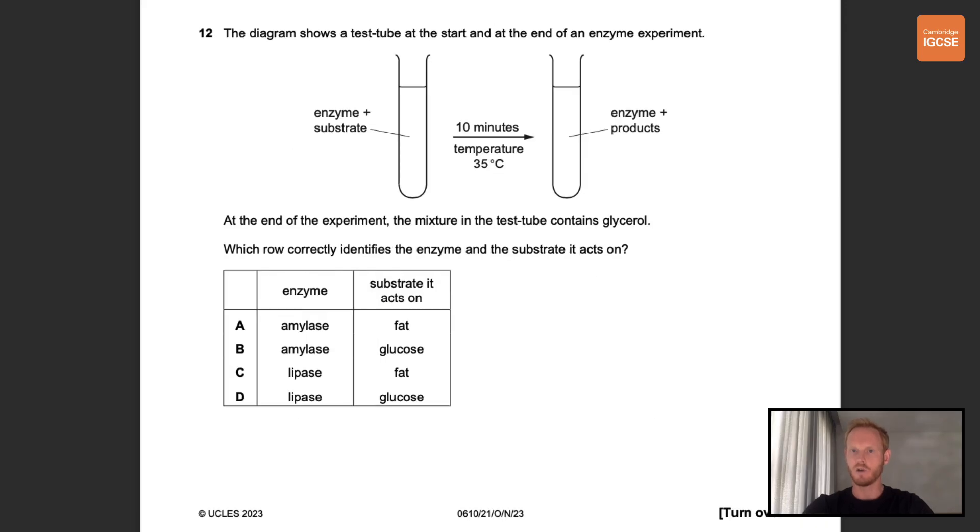Number 12. The diagram shows a test tube at the start and at the end of an enzyme experiment. At the end of the experiment the mixture in the test tube contains glycerol. Which row correctly identifies the enzyme and the substrate it acts on? So glycerol is one of the subunits of a fat molecule, the other being fatty acids. So the substrate in question is fat. The enzyme that digests fat is lipase. So the correct answer is C.